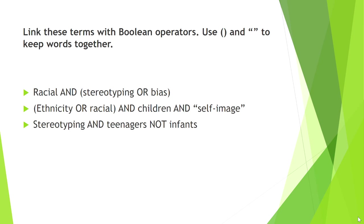For the second search example, we would get results that have ethnicity or racial, and also results that have children and self-image. With self-image in quotation marks, that's going to give us this phrase in the precise order — we're not going to get results just for self or just for image, but for self-image specifically. For the third example, we're going to ask for results that include the word stereotyping and the word teenagers, but not necessarily infants.